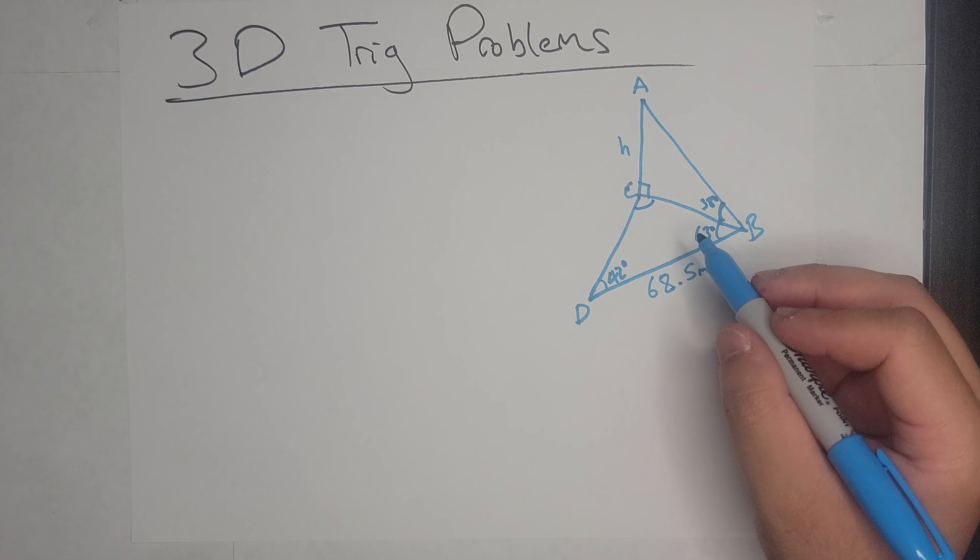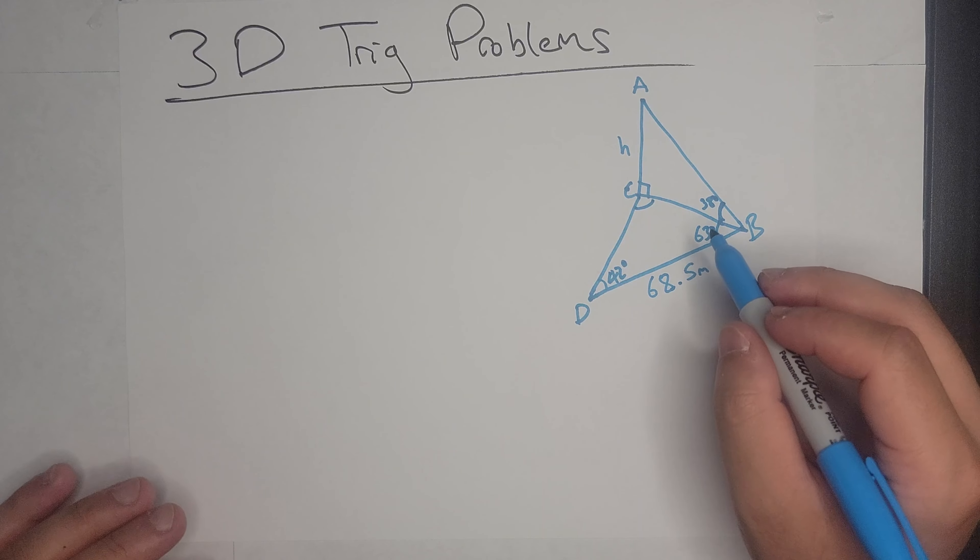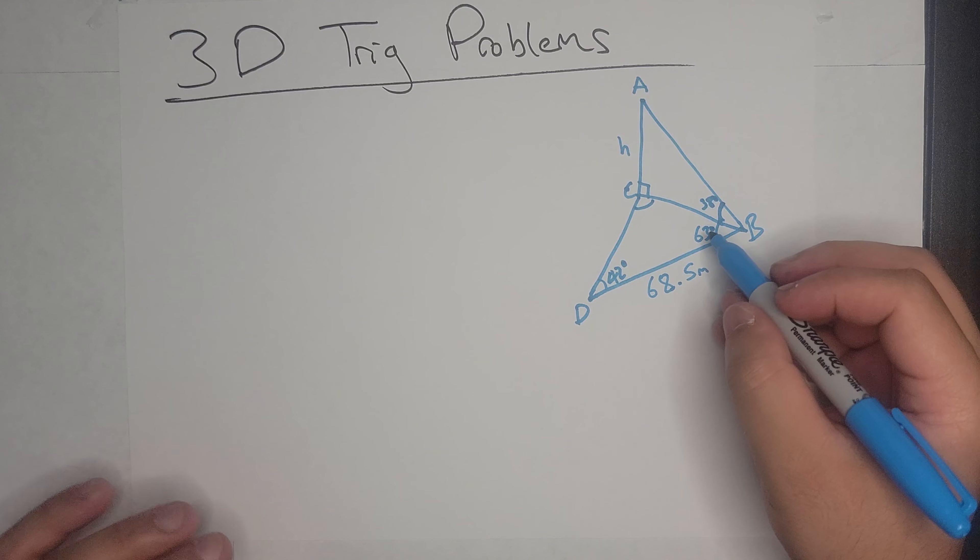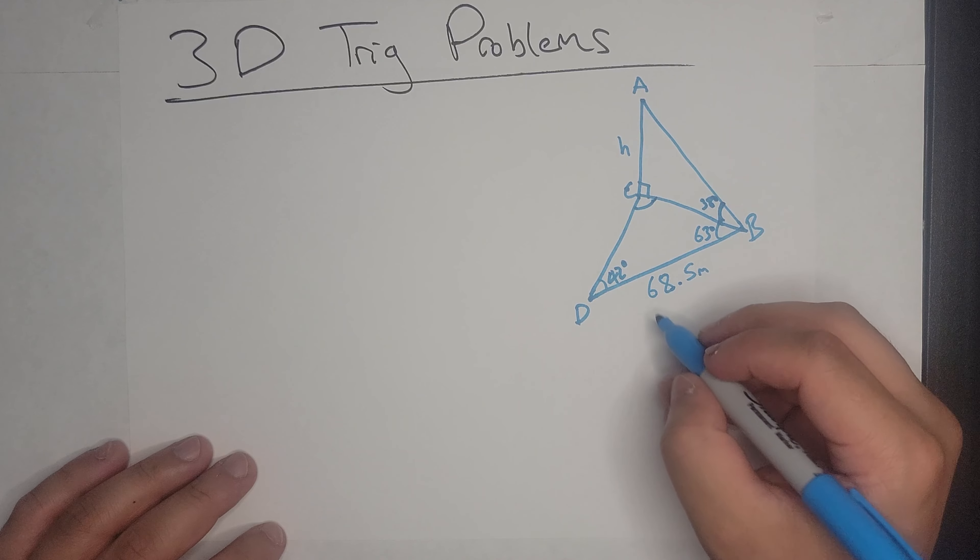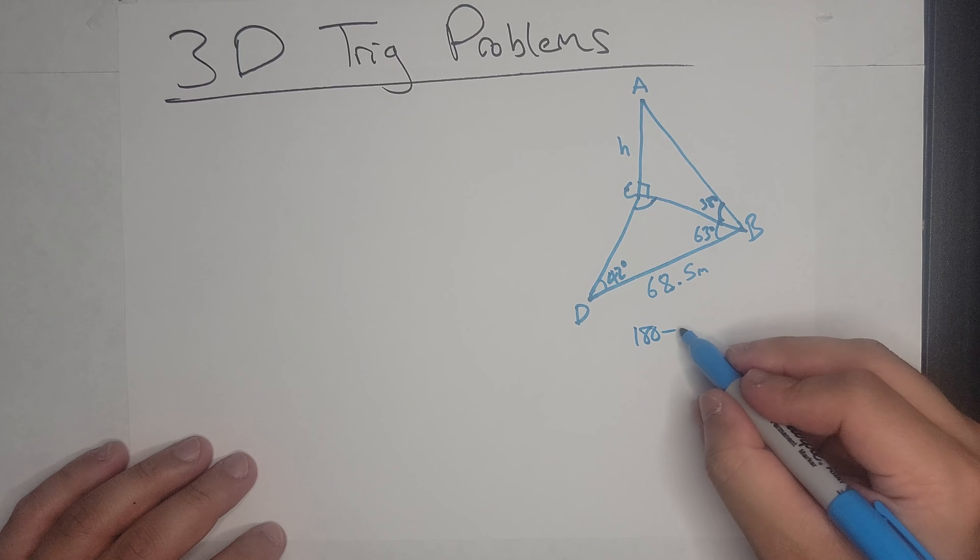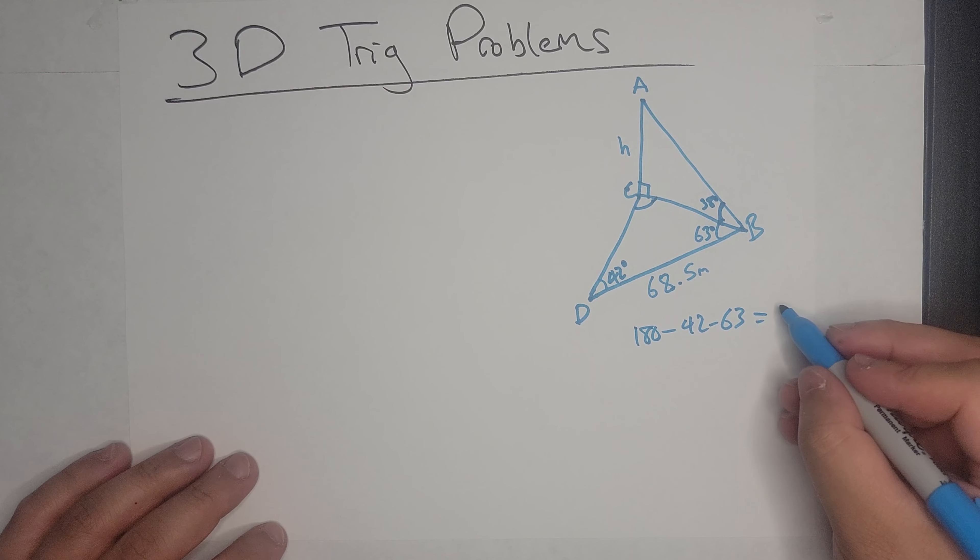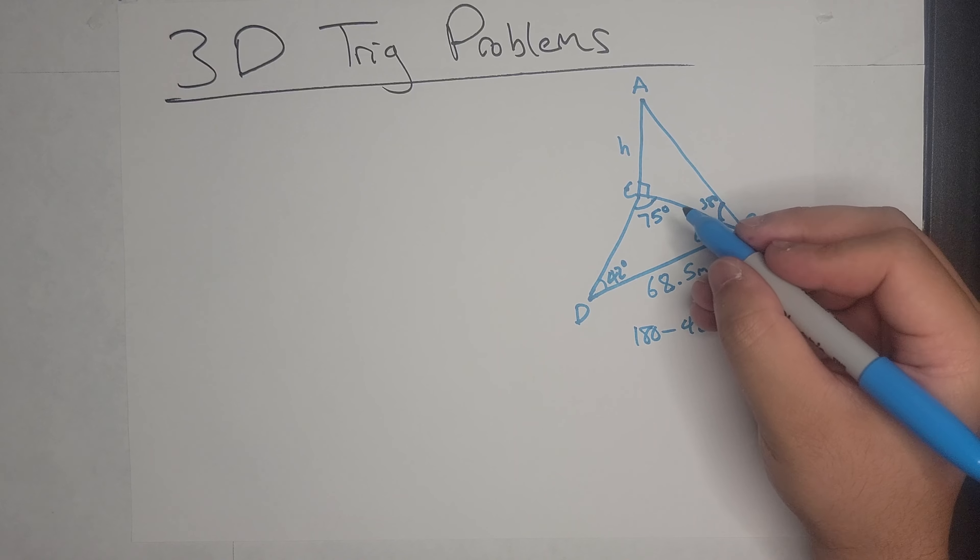So one of the first things I can do, I have two angles here, very quickly I can solve for this angle here. So 180 minus 42 minus 63 is equal to 75 degrees. And now I have that.